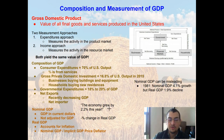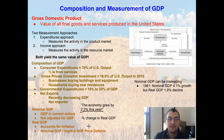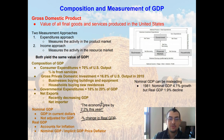So if you ever hear on the news that the economy grew by 2.2% this year, what they're talking about is the percentage change in real GDP — meaning we sold 2.2% more in the value of products after adjusting for inflation compared to the previous year. In a sense, it means we are actually selling more products, because we are using real GDP adjusted for inflation.